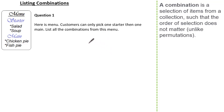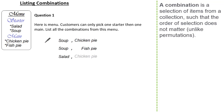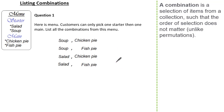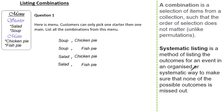You'll notice we followed an organised strategy, starting with salad. You may have decided to start with soup and then chicken pie, soup and then fish pie, and then salad and chicken pie, and salad with fish pie. It does not really matter as long as you've identified your four combinations. Whichever approach you use, the outcomes of an event can be listed in an organised or systematic way to ensure none of our possible outcomes are missed out. This is called systematic listing — a method of listing outcomes in an organised and systematic way to make sure no possible outcomes are missed.